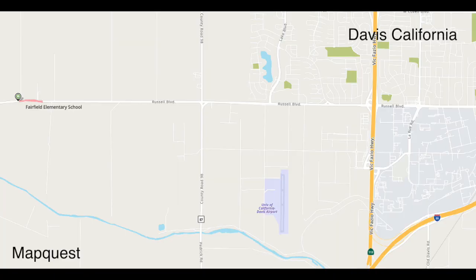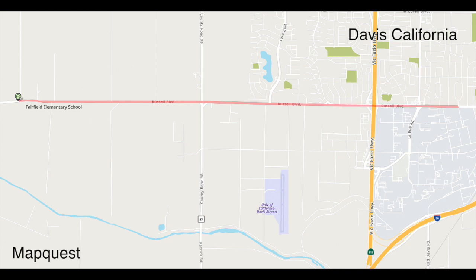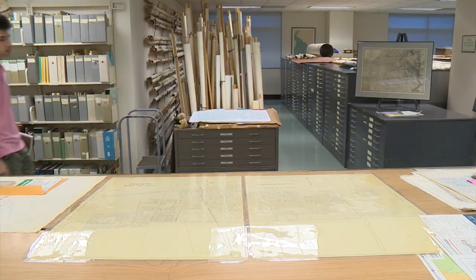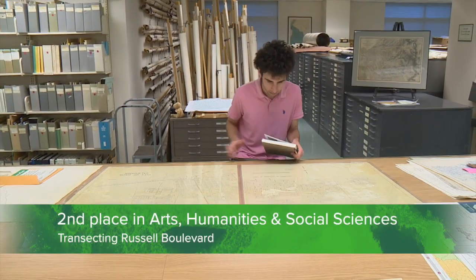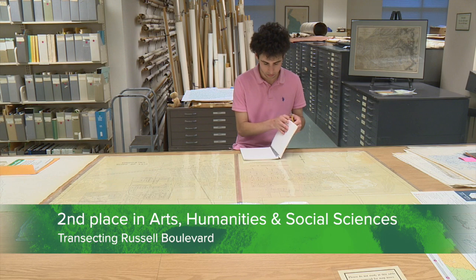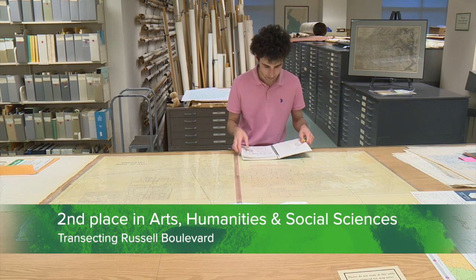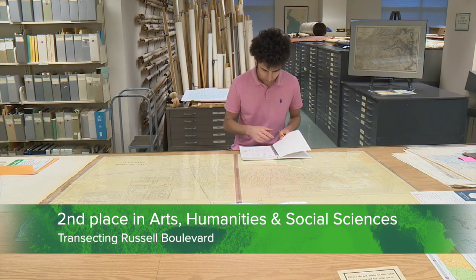My project was called Transacting Russell Boulevard. I found a five-mile stretch of Russell Boulevard going from Fairfield Elementary School over to Howard Way, and I talked about how the built landscapes in Howard Way differed from the natural landscapes over near Fairfield Elementary School. My goals in the project were to see how different environments have changed over time, especially comparing the built landscapes to the natural landscapes.